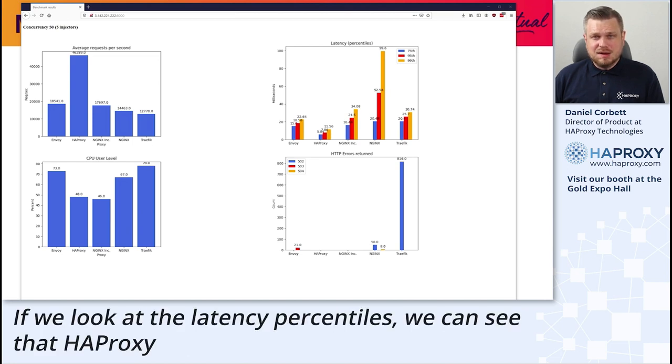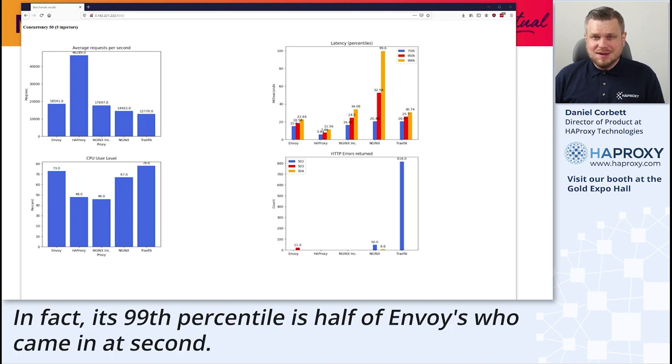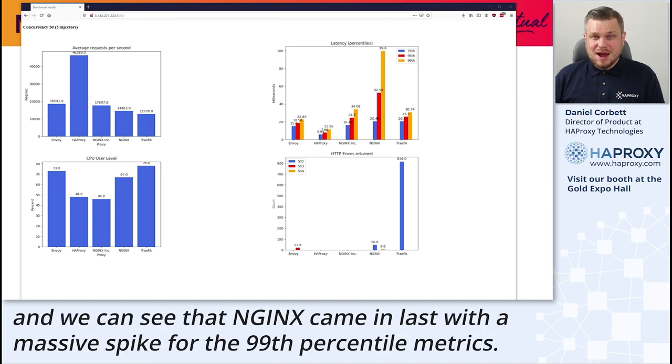If we look at the latency percentiles, we can see that HAProxy had the lowest 75th, 95th, and 99th percentiles. In fact, its 99th percentile is half of Envoy's who came in second. Traefik and NGINX Inc. were neck and neck for a close third. And we can see that NGINX came in last with a massive spike for the 99th percentile metrics.